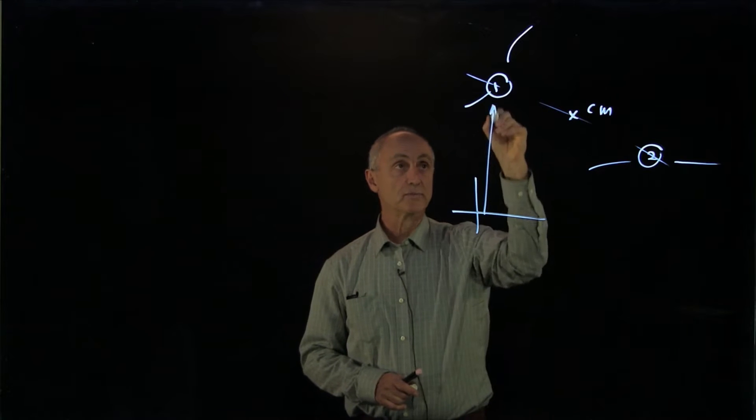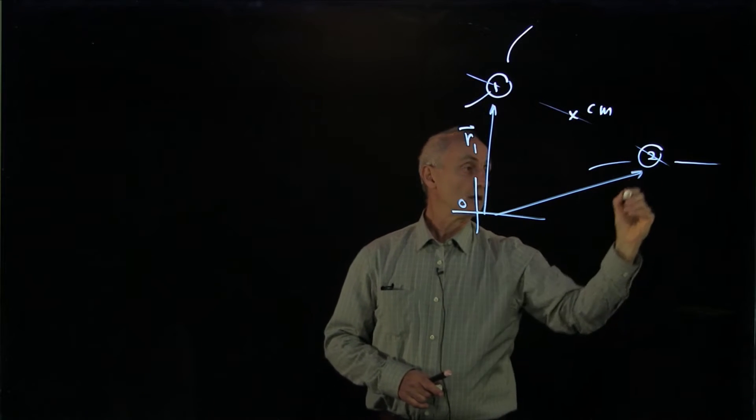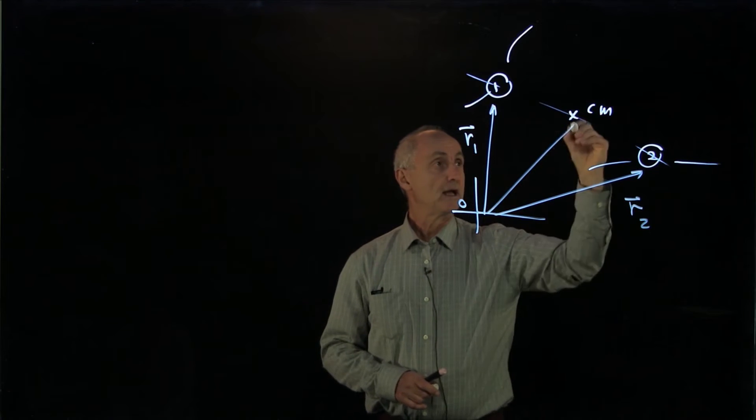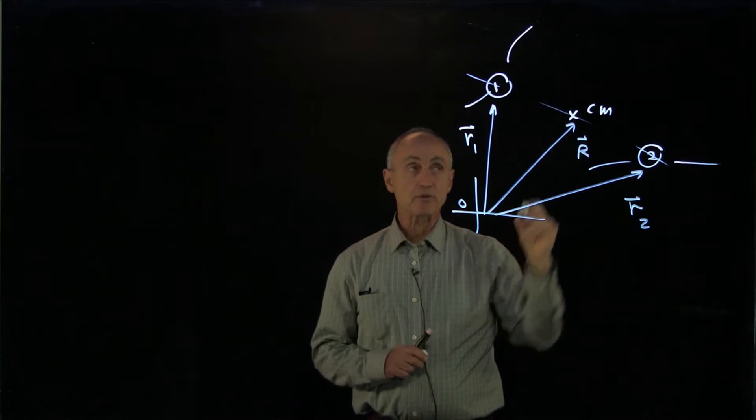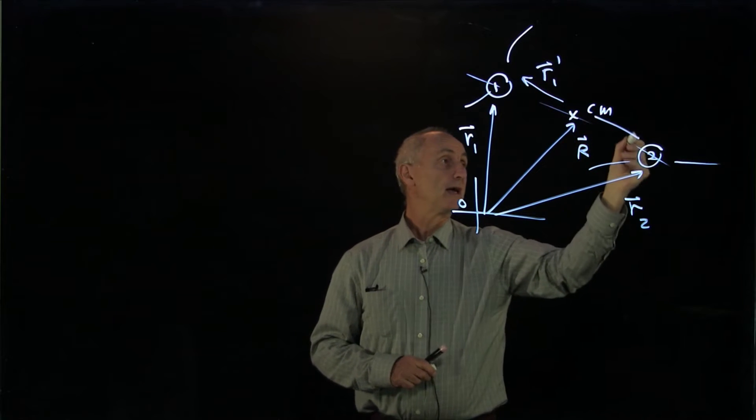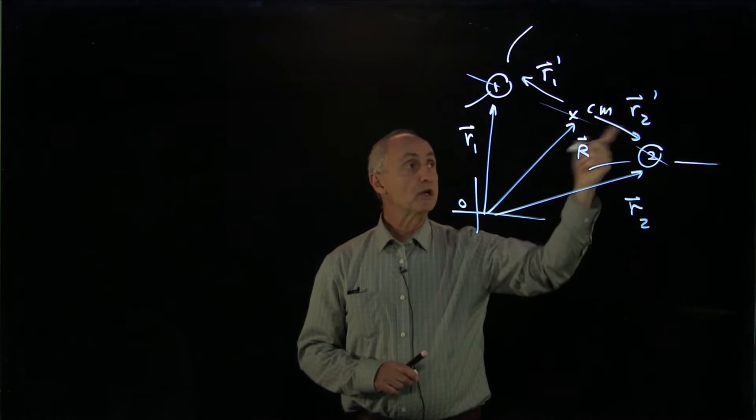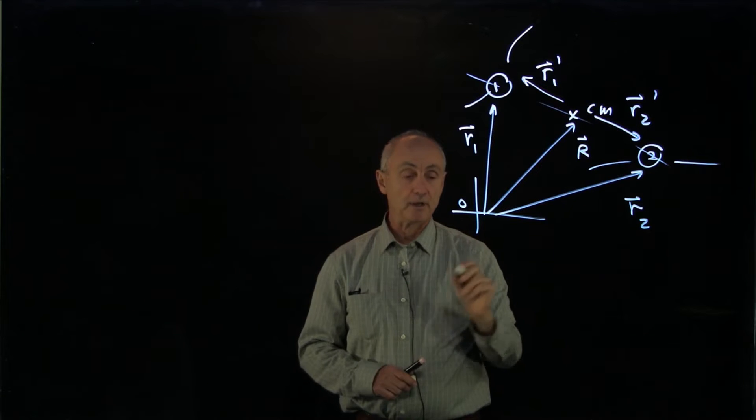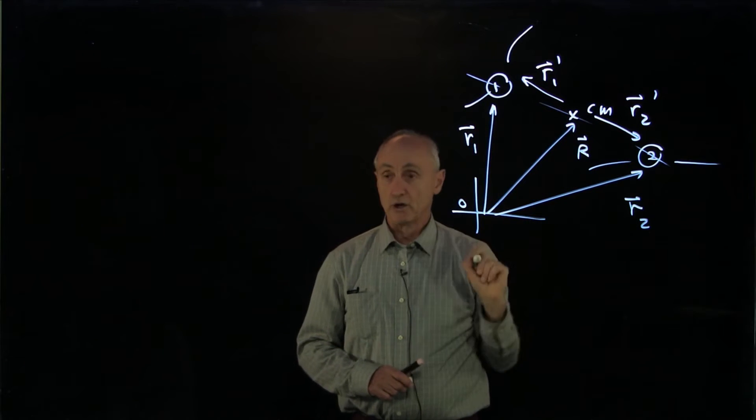So let's choose some coordinate system. Origin down here. Here's our particle r1. Here's our particle r2. And here is our center of mass. In the reference frame of the center of mass, we have position vector r1 prime, and we have position vector r2 prime. What we'd like to do is find expressions for r1 prime and r2 prime in terms of the positions of r1 and r2.